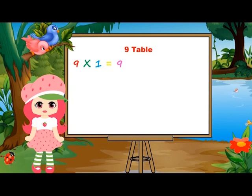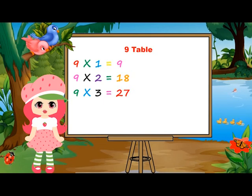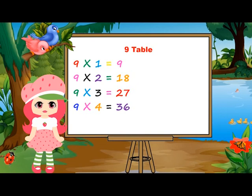9 twos are 18. 9 twos are 18. 9 threes are 27. 9 threes are 27. 9 fours are 36. 9 fours are 36. 9 fives are 45.